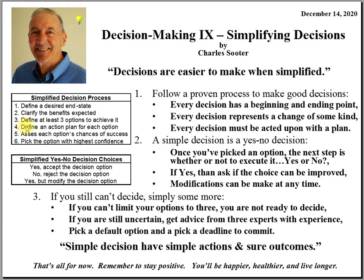Number four: define an action plan for each option. Now this is just basically a top level without any of the details. Five: assess each option's chance of success. Not every option is equally implementable. And then six: pick the option with the highest confidence of success.